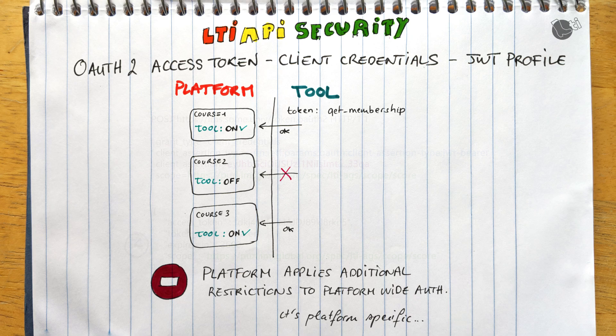Platforms may also expose their own set of services with their own scopes, and possibly blend LTI services and platform-specific services together through a single authorization endpoint — so you could request a token covering both platform and LTI services at the same time, though that would be platform-specific. That's it for LTI API security; the next videos will cover the actual services that use these mechanisms.